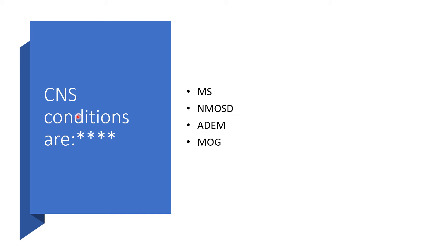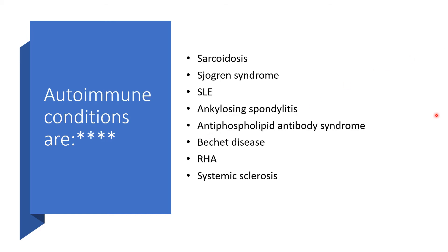Central nervous system conditions that could lead to transverse myelitis include multiple sclerosis, NMOSD — neuromyelitis optica spectrum disorder — ADEM, which is acute disseminated encephalomyelitis, and MOG, myelin oligodendrocyte glycoprotein. Autoimmune conditions include sarcoidosis, Sjögren's syndrome, systemic lupus erythematosus, ankylosing spondylitis, antiphospholipid antibody syndrome, rheumatoid arthritis, and systemic sclerosis. Once you identify one autoimmune condition, screen for the rest.